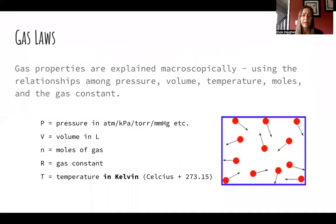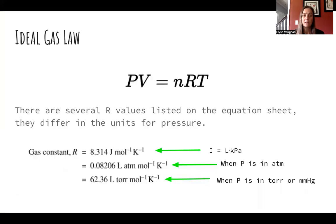So let's jump right in. We're going to start with the gas laws — the macroscopic. We know that we can relate pressure, volume, temperature, number of moles, and the gas constant. Those are related with what we call the ideal gas law, which is PV = nRT. This is the overarching law.